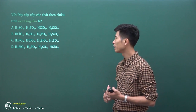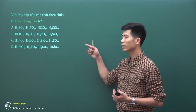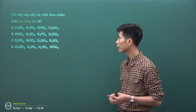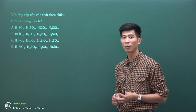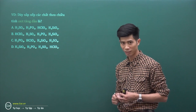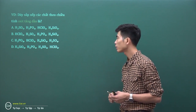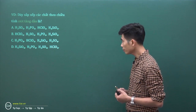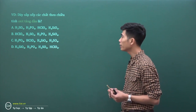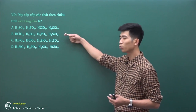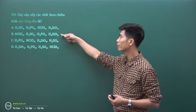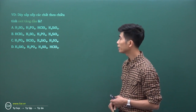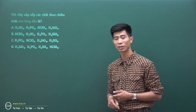Rất nhiều em bối rối khi chọn đáp án đúng cho câu hỏi này, vì với lớp 10 các em chưa làm quen với các acid, chưa hiểu bản chất tính acid và tính bazơ. Thầy sẽ hướng dẫn cách làm. Nhớ cho thầy cái sự biến đổi tuần hoàn của tính acid: trong chu kỳ theo chiều tăng dần điện tích hạt nhân từ trái qua phải thì tính acid tăng, tương tự như tính phi kim.